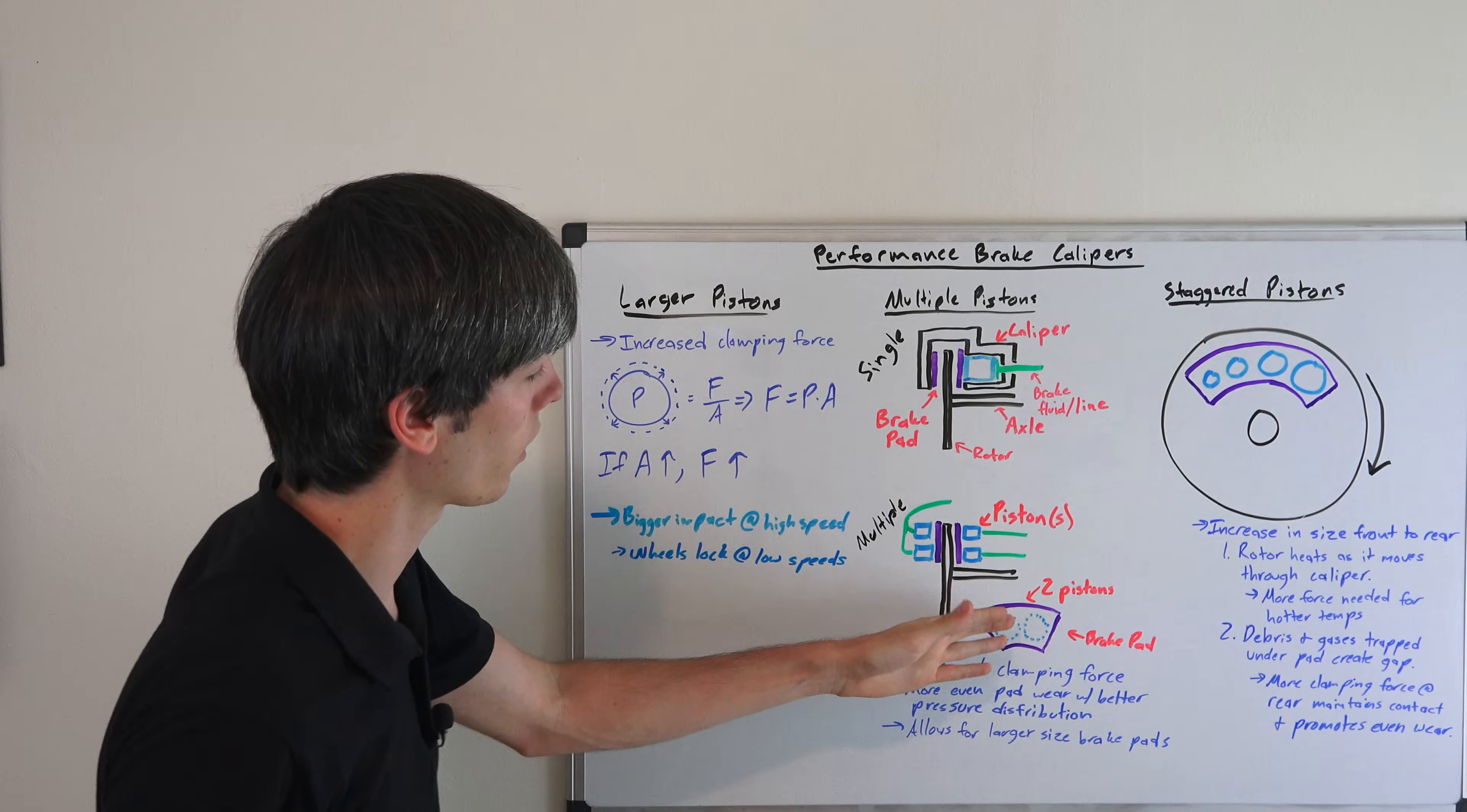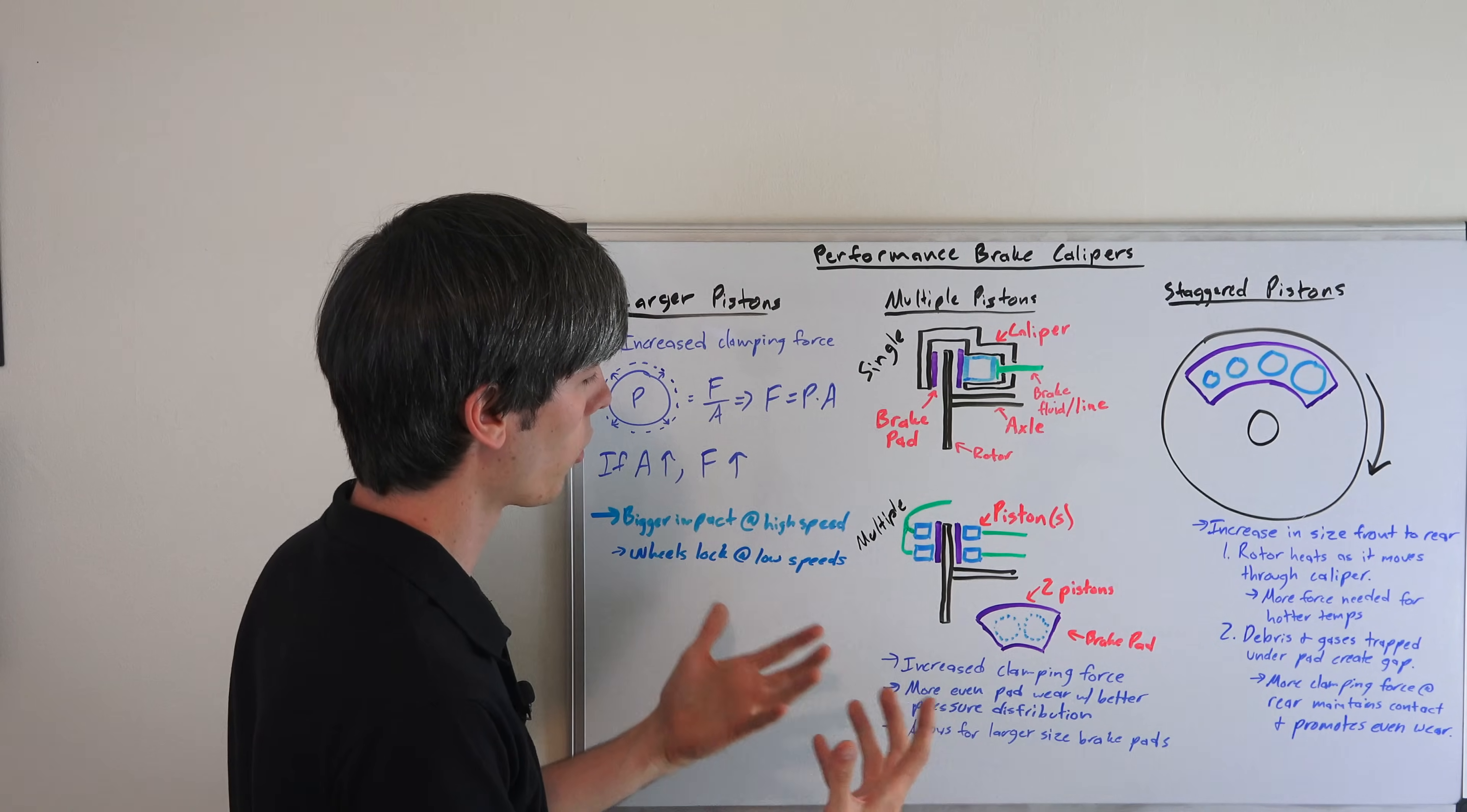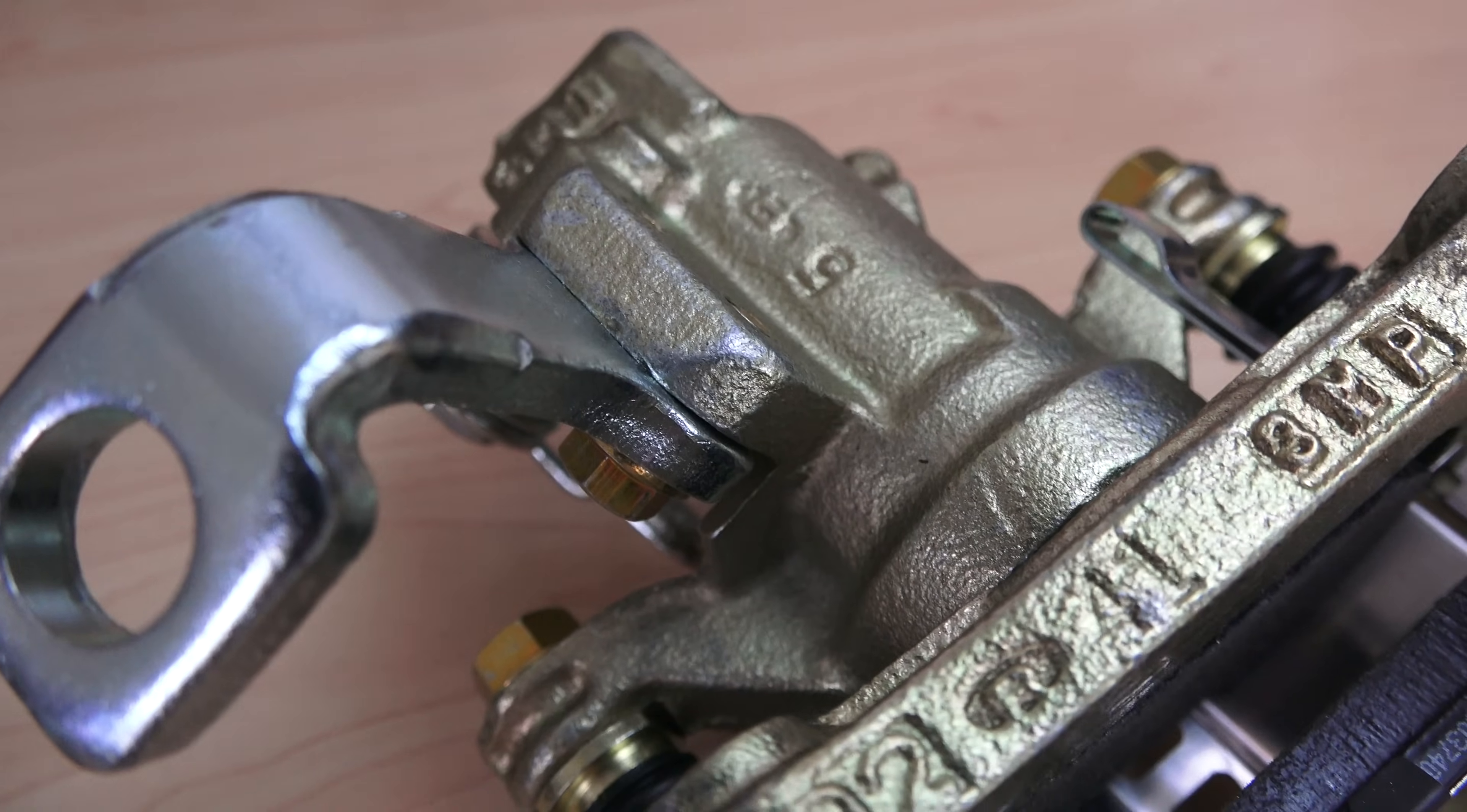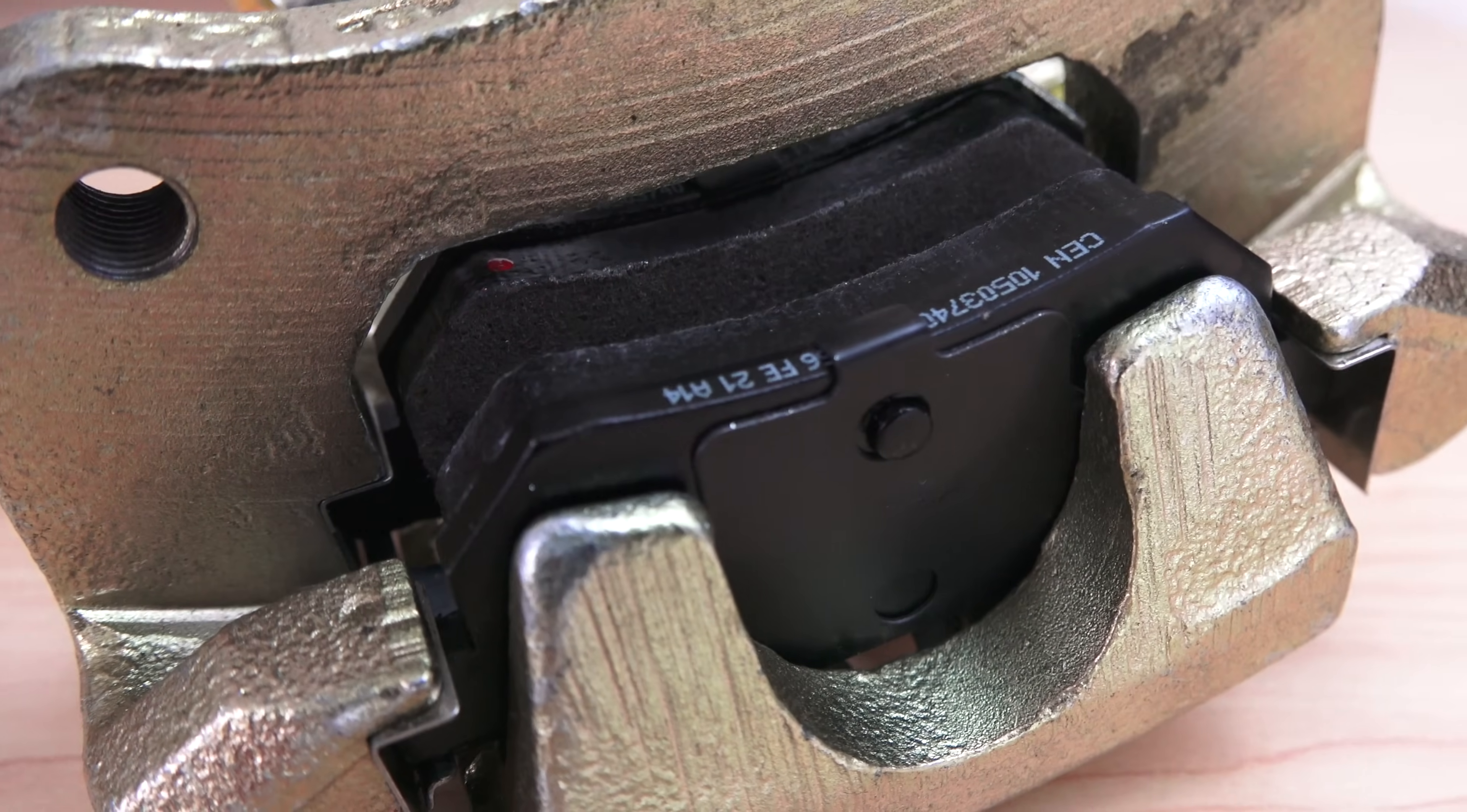Essentially what you've got is the biggest change that you're making is that you're allowing there to be more area on that brake pad at which you can press it against the rotor. And so by doing this you're going to increase clamping force because you've got more area. You're going to have more even pad wear with better pressure distribution across the brake pad, and it's also going to allow you to use larger brake pads.